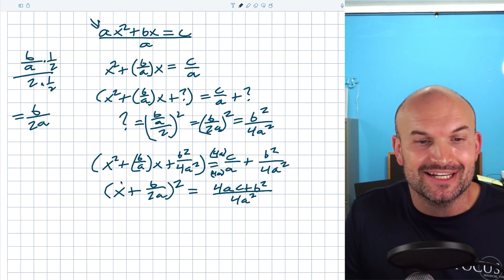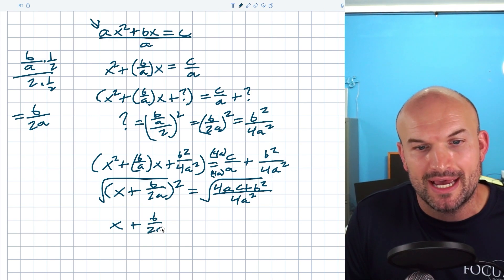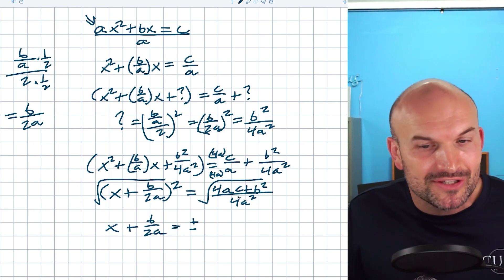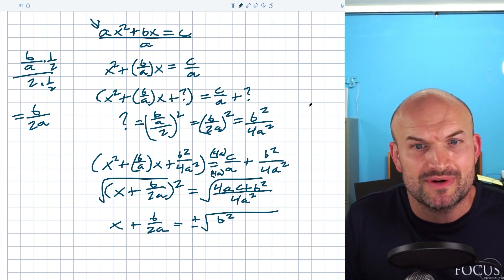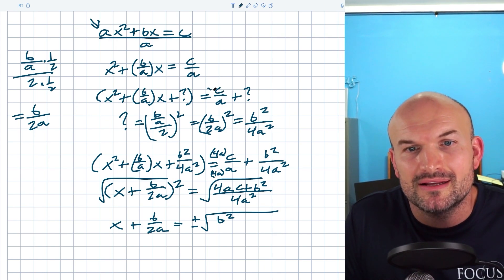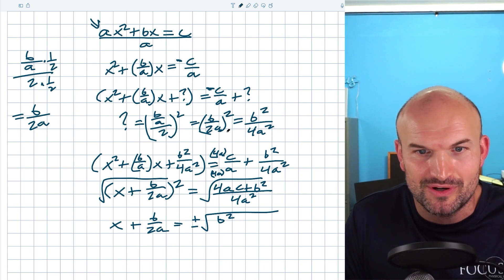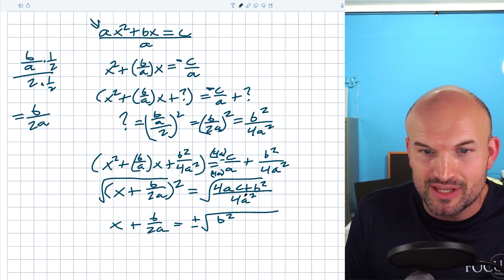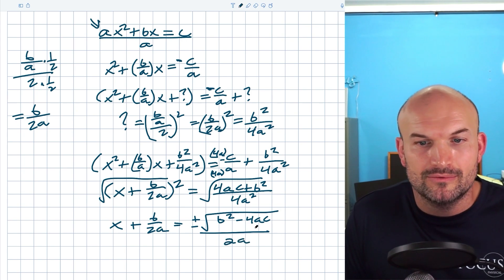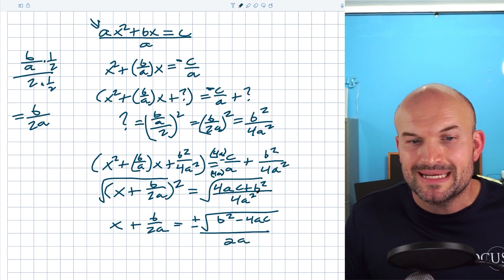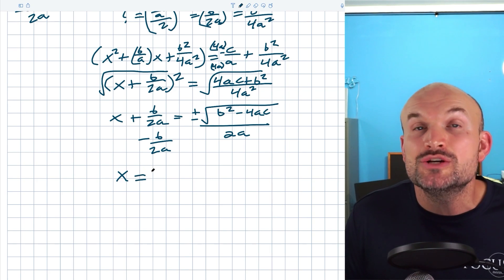Now I have one variable x, so I apply inverse operations — taking the square root of both sides gives x plus b over 2a equals plus or minus the square root. At this point I notice I made a sign error earlier: when I moved c to the other side, it should have been negative c, so the numerator should be b squared minus 4ac, not plus. Correcting that, we get plus or minus the square root of b squared minus 4ac, all over 2a — because the square root of 4a squared is 2a. Subtracting b over 2a from both sides gives us the complete formula.